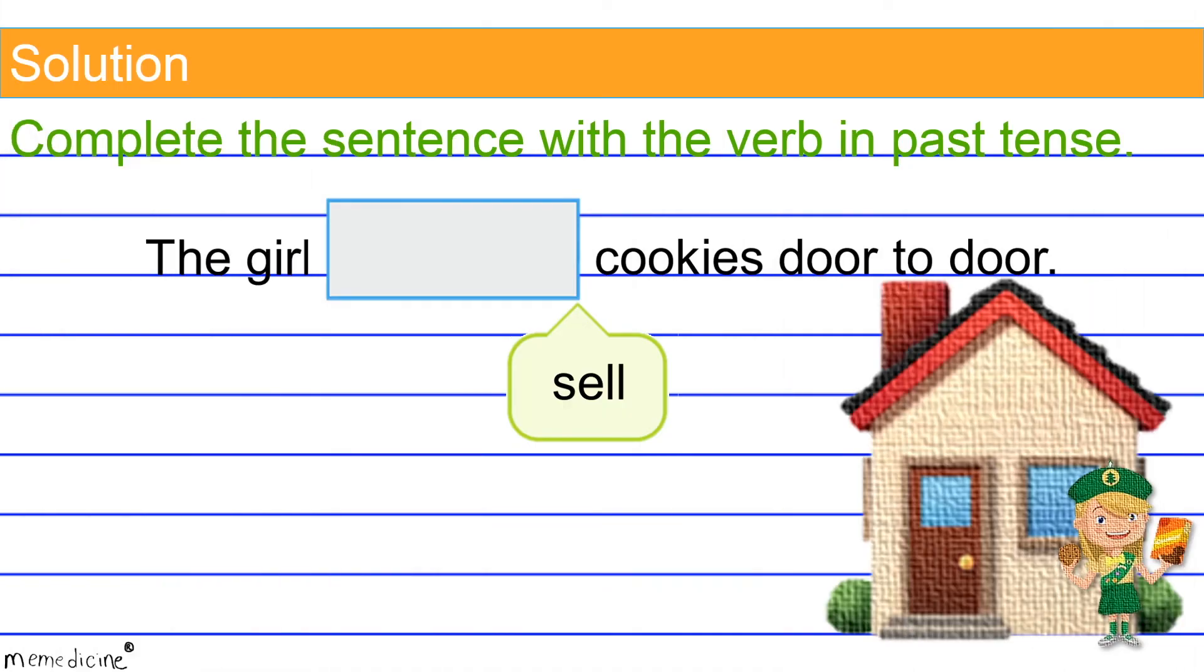All right, back to our original example. We need to shift the tense of sell to its past tense form, and that would be sold. This is just something you'll have to commit to memory.